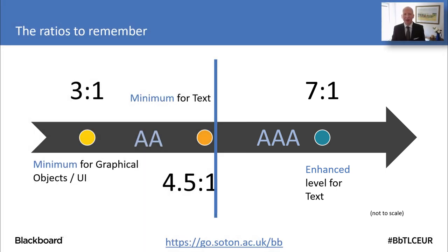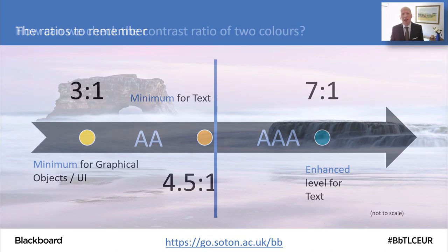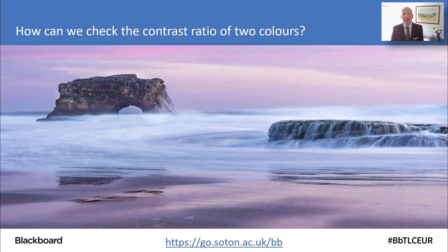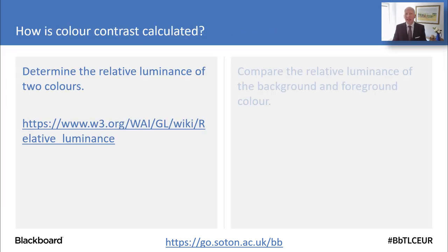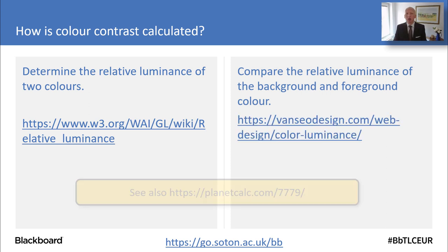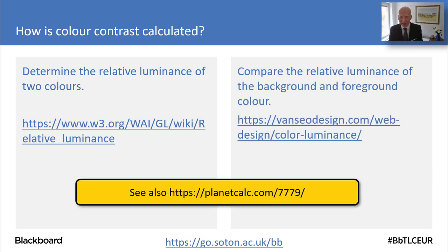I don't think we should be aiming just to meet the minimum. We should probably be aiming for the enhanced level — it's a bit more future proof. How do you actually check the contrast between two colours? It involves determining the relative luminance of two colours and then comparing the luminance of the foreground and background colour. I've found some great pages which explain it, and this is what the algorithm looks like, but most of us will use an online colour contrast checker.